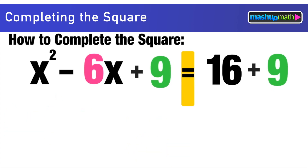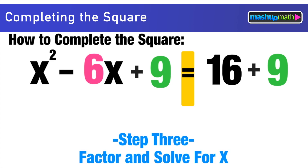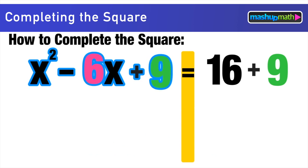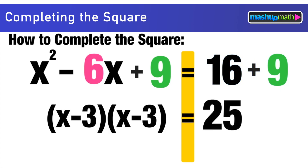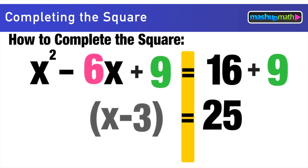The third and final step is to factor and solve for x. The trinomial on the left, x² - 6x + 9, factors to (x-3)(x-3). The whole point of completing the square is to factor a trinomial this way — with identical factors — so we can solve using square roots. On the right side, 16 + 9 = 25, and we rewrite (x-3)² = 25.